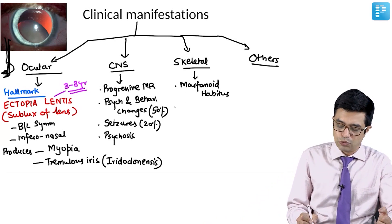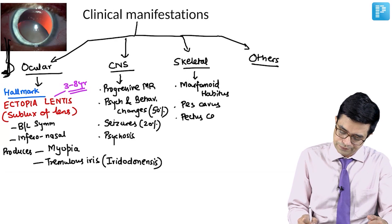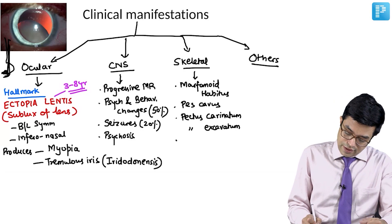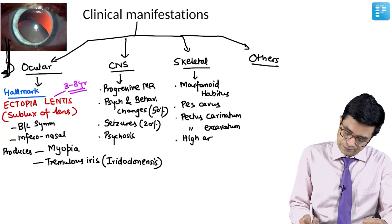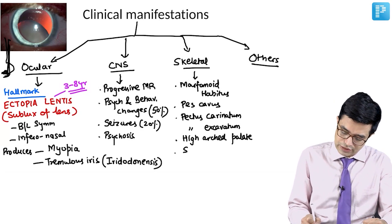Secondly, they may have bony abnormalities like pes cavus, they may have pectus carinatum or pectus excavatum, they may have features like high arched palate, they may have scoliosis and they may have overcrowding of teeth.